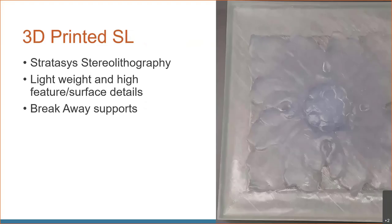Looking at stereolithography: this technology has been around for a long time. It works with a vat of liquid photopolymer, and a UV laser draws on the surface, curing the polymer into a rigid plastic where it hits. You can make really lightweight, hollow parts with very high feature and surface detail. One drawback is that stereolithography uses breakaway supports exclusively, and when you break them away, you leave little nubs that need to be cleaned up.